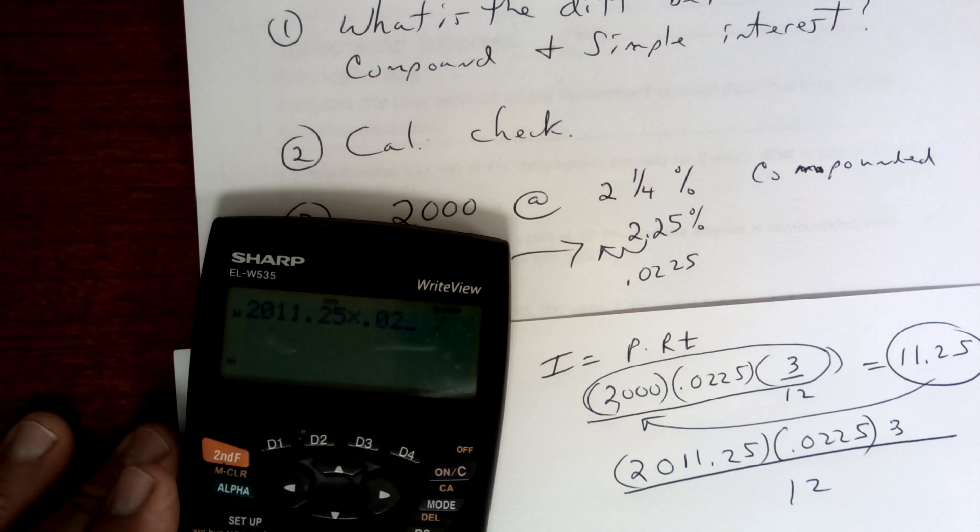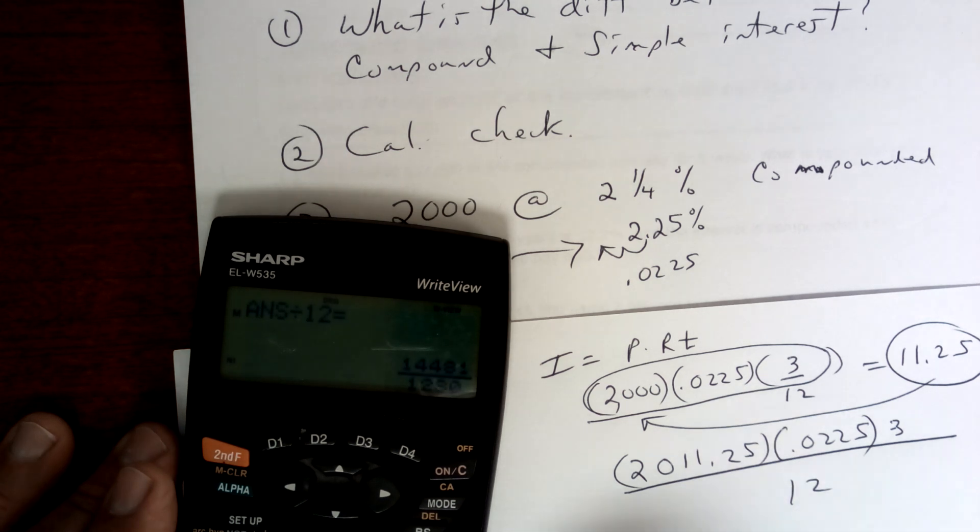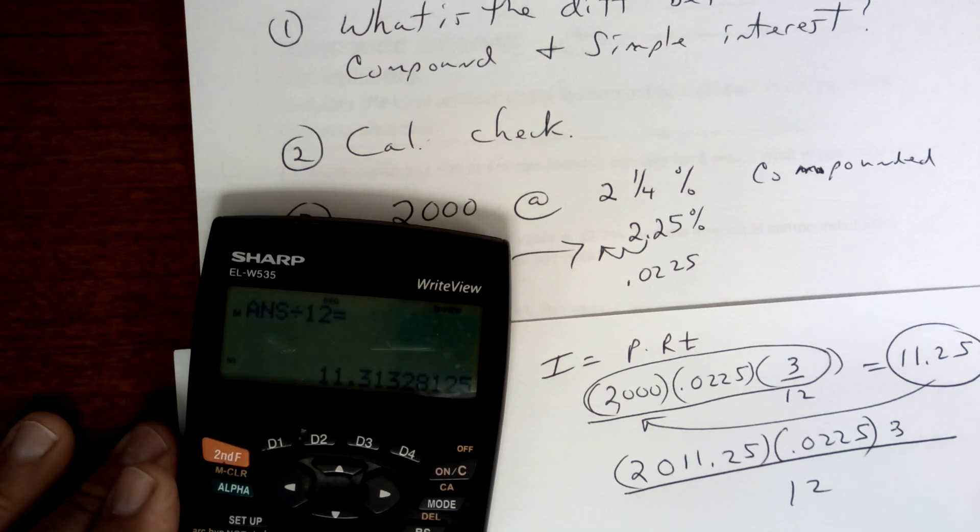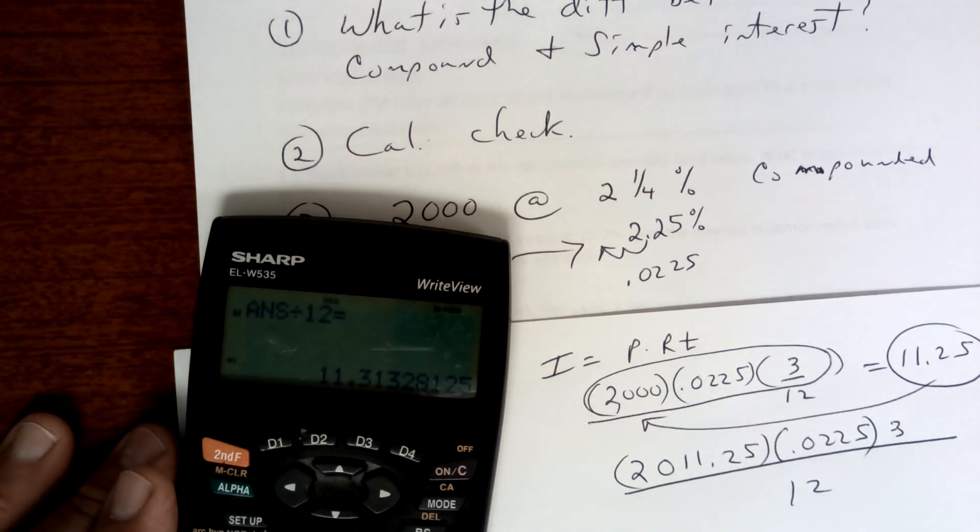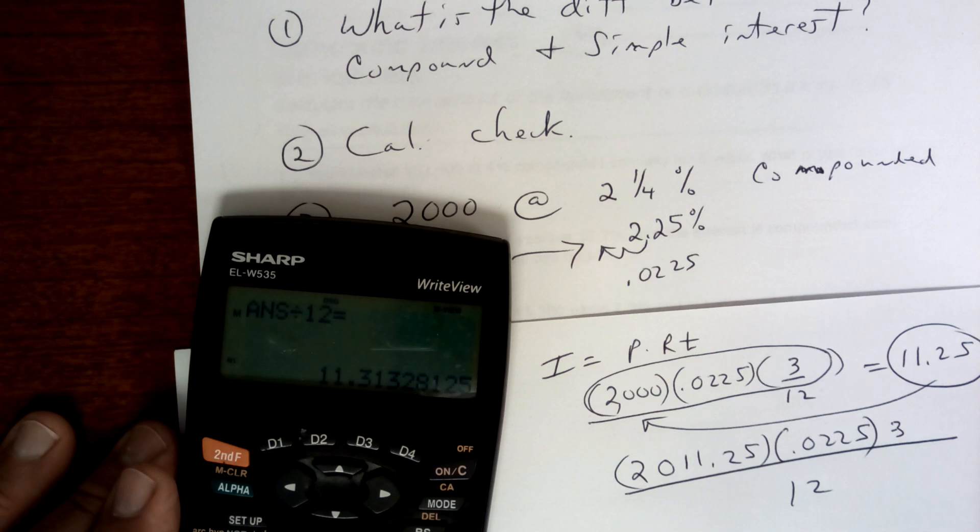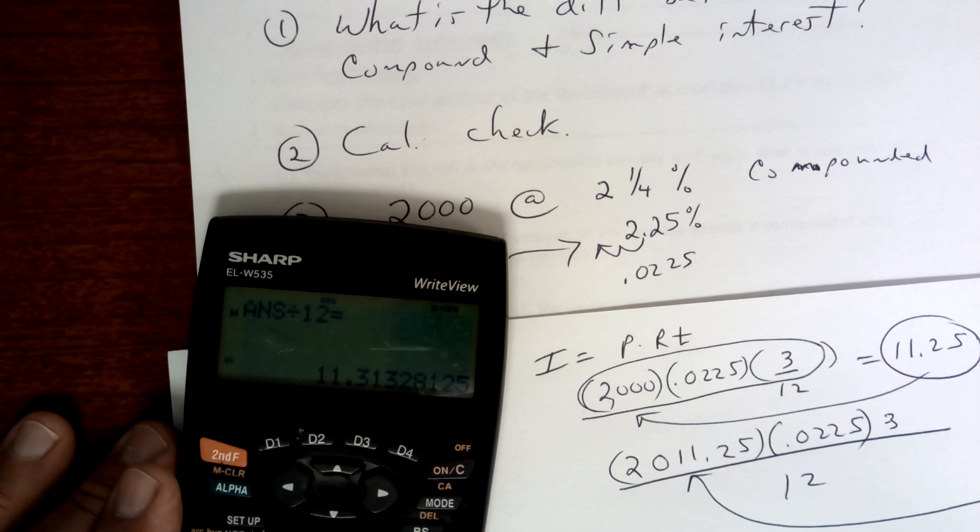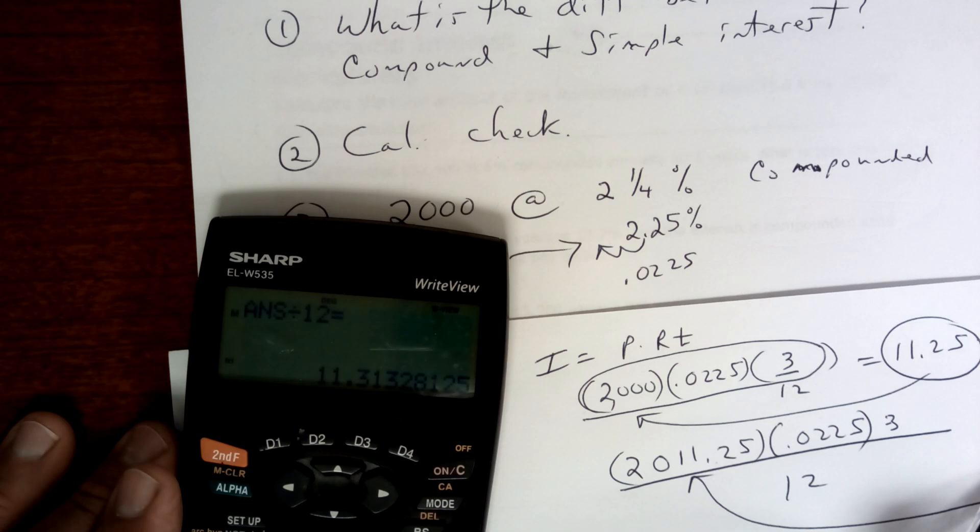So now you're going to take your amount, which is 2011.25, times 0.0225 times 3, press equals, divide by 12. Your new interest, if I did this right - it looks right - $11.31. And then you go for the next three months, so the third one.